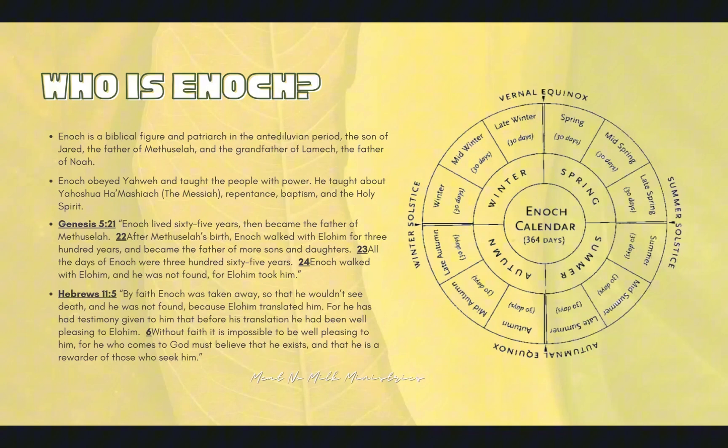Bullet point number two: Enoch obeyed Yahweh and taught the people with power. He taught about Yehoshua HaMashiach, repentance, baptism, and the Holy Spirit — all of this is chronicled in the book of Enoch. The book is very complex; a lot of what's in there you have to map out in order to understand it. Some regard Enoch as a prophet. Yah obviously had great favor on him to reveal to him the mysteries of heaven and also the end times. He's referenced in both the Torah and the New Testament, giving two biblical witnesses to who this person is.